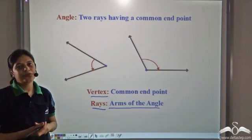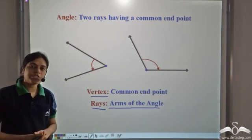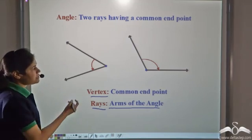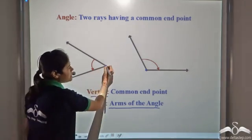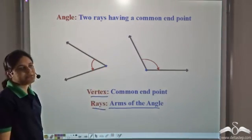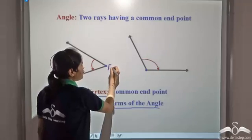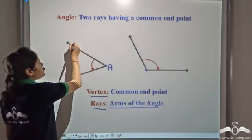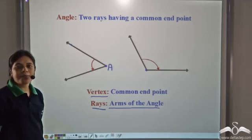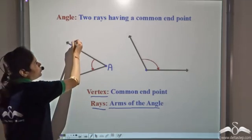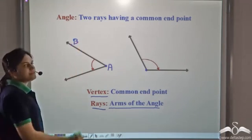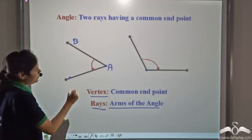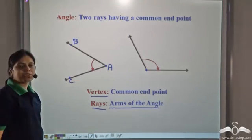Now how do we name an angle? We name any geometrical figure using points. So first, let us name this point at the vertex — say we call it point A. Now we take a point on this arm, call it point B. We take a point on the other arm and call it point C.